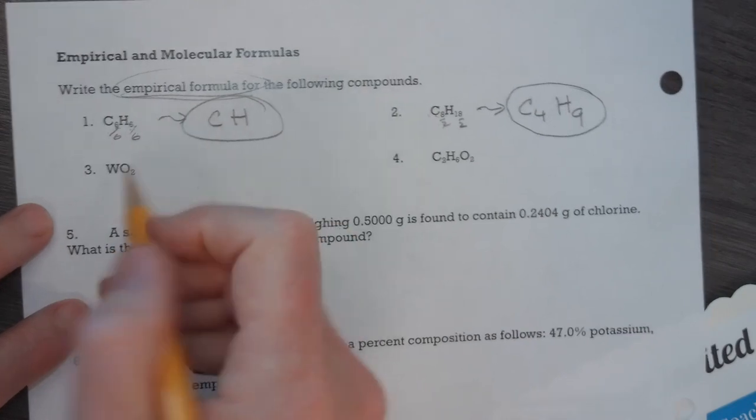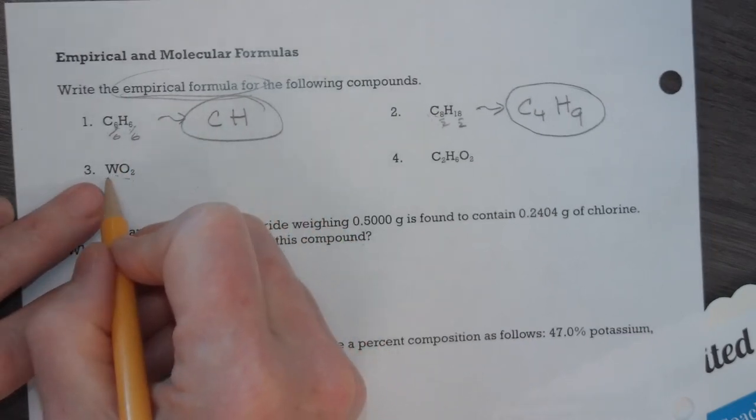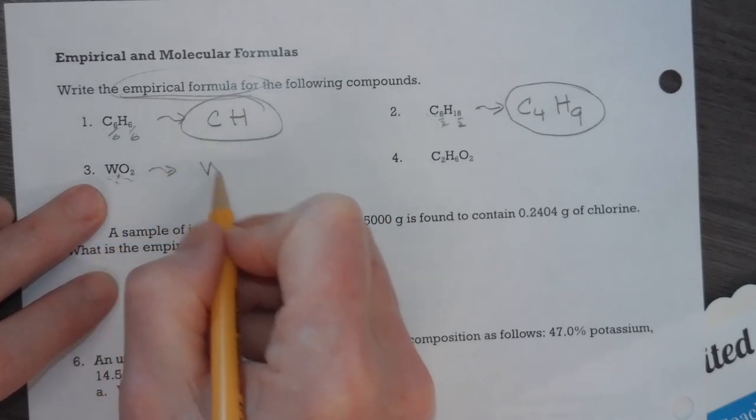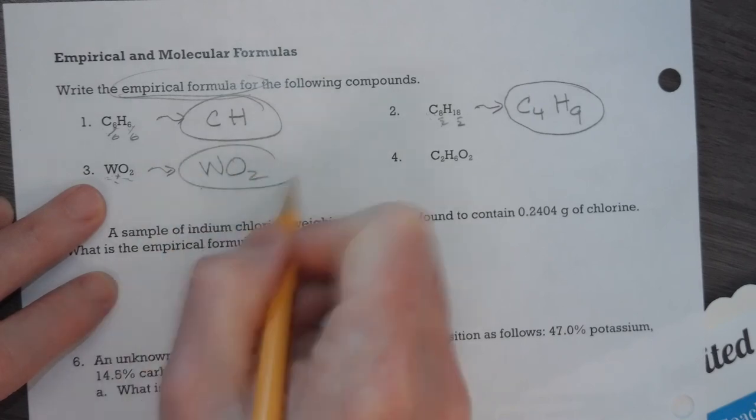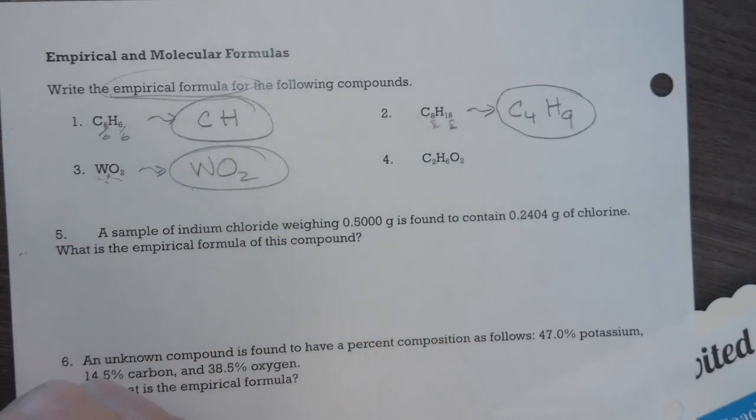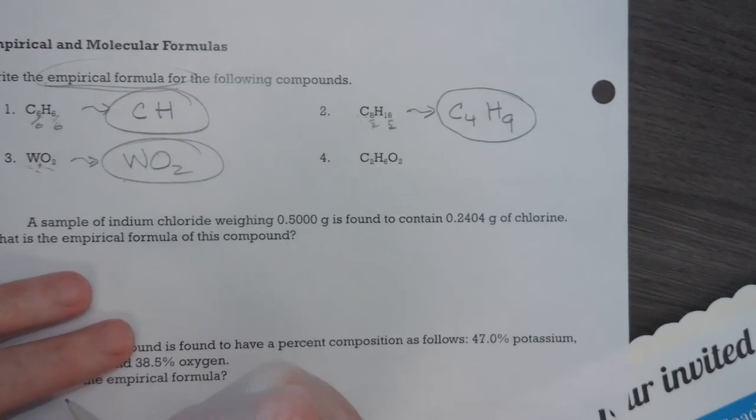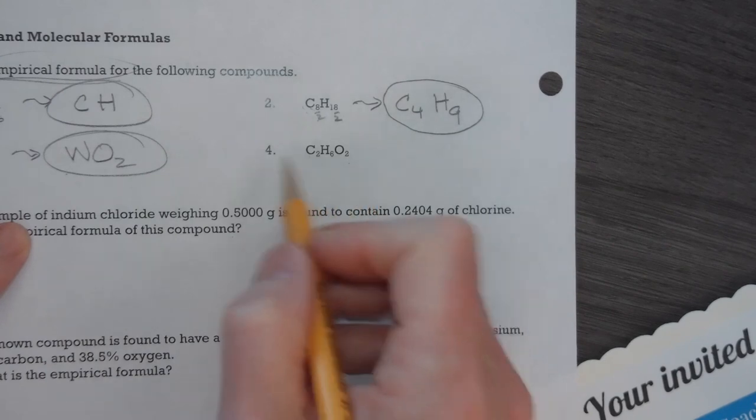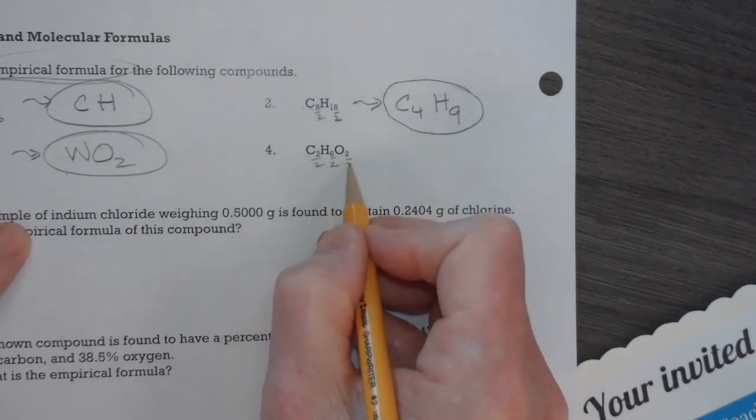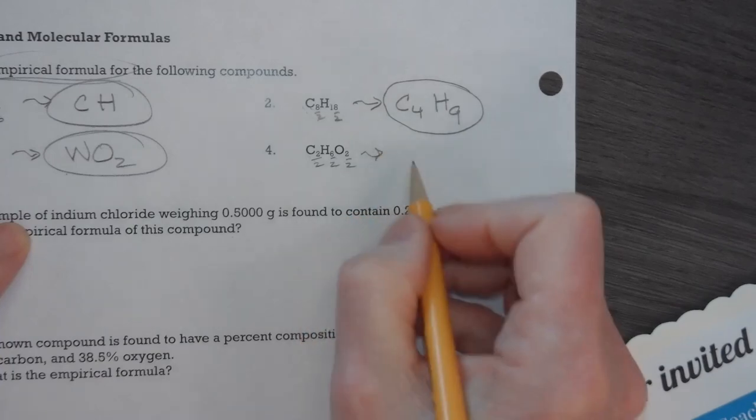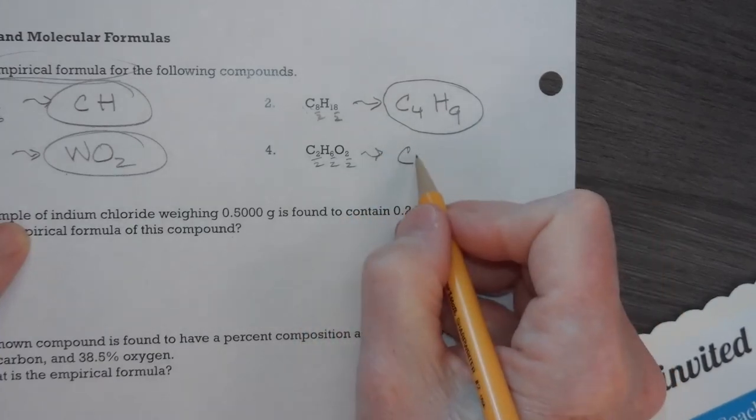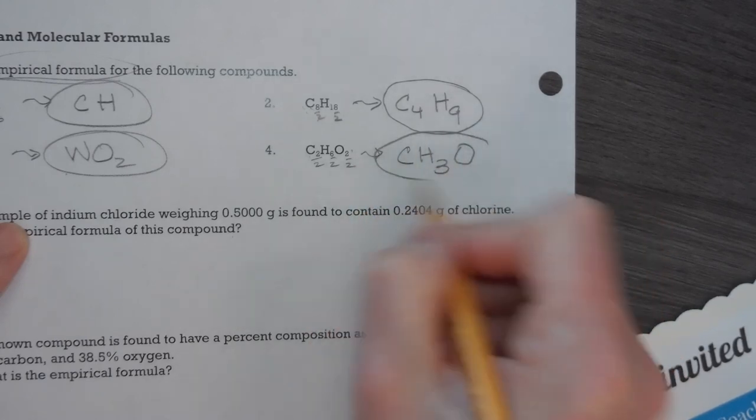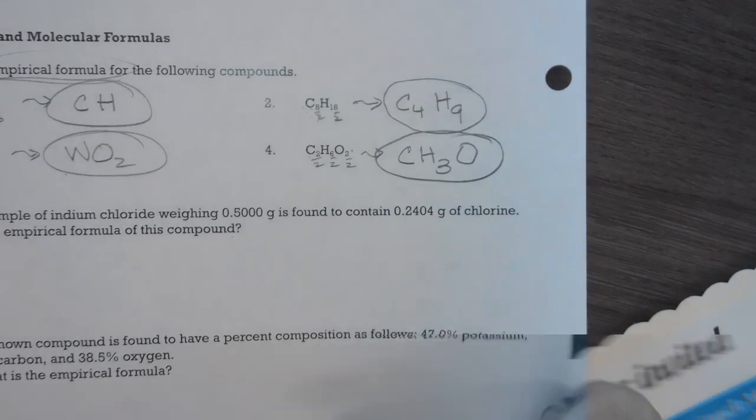Tungsten oxide here we have. There is nothing that's more simplified, so actually the empirical formula and the molecular formula are the same for tungsten oxide. All right, so here we have C2H6O2. They're all even, so I know that I can divide them all by 2. 2 divided by 2 is 1. I don't write that. 6 divided by 2 is 3. And 2 divided by 2 is 1. When it's 1, it's an understood 1. So those are the empirical formulas.